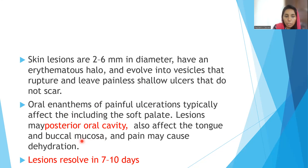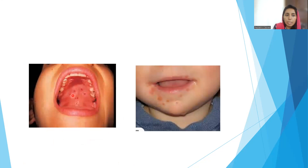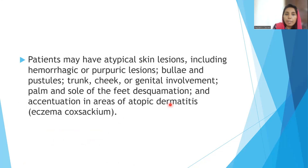The oral enanthem is really painful, affecting the soft palate, oral cavity, tongue, and buccal mucosa. Severe pain causes children to refuse eating and they may develop dehydration. These lesions resolve in seven to ten days. Patients may have atypical skin lesions including hemorrhagic or purpuric lesions, bullae, and pustules, with trunk, cheek, or genital involvement. Desquamation of the palms and soles is really common in HFMD — the whole skin peels off from the palms and soles after the acute illness.